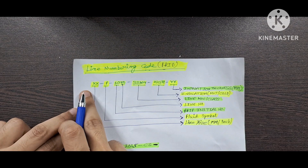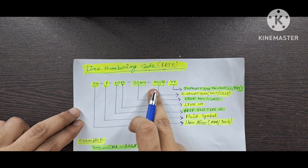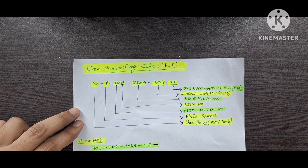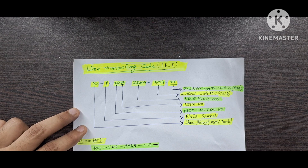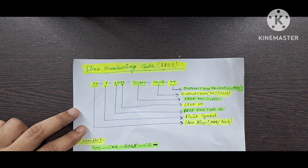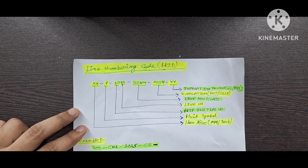Here you could simply see that I have given you the line numbering code, which is mainly mentioned in the P&ID in each line. You will see this code. So what is the significance of this code — what this code tells us — that we are going to discuss in this video.